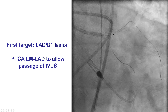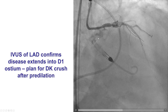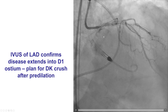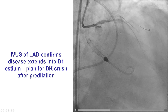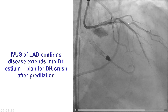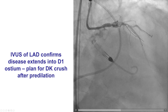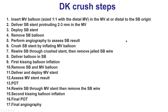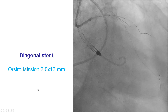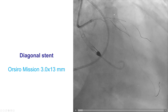In this patient, we first ballooned the left main to ensure easy access to the vessels, then performed intravascular ultrasound, which showed significant disease in both the LAD and the diagonal. So we predilated both lesions, and our plan was to perform the double kissing Crush technique. These are the 17 steps of DK Crush, which are described in a separate video, and were performed here.